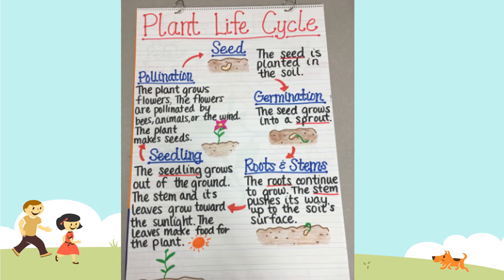The seed grows into a sprout with roots and stems. The roots continue to grow, and the stem pushes its way up to the soil surface. Then stage three happens: the seedling. The seedling grows out of the ground. The stem and its leaves grow toward the sunlight. The leaves make food for the plant. The seedling will be a small plant.